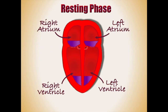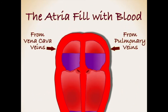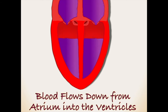During the resting phase, blood first flows into the two top chambers of the heart, the left and right atrium. From there it flows down through valves into the larger bottom chambers, the left and right ventricle, allowing them to also fill with blood.